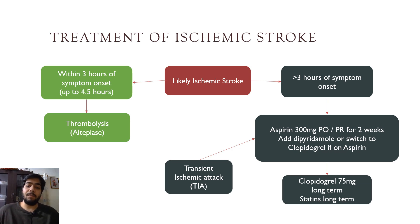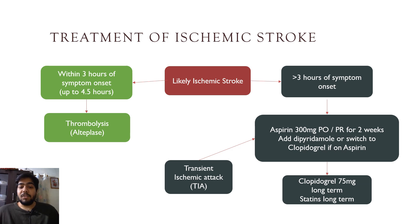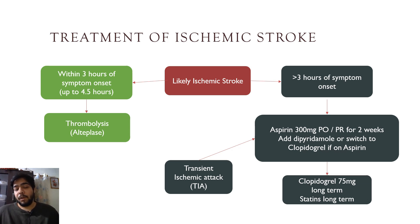In those cases, give aspirin 300mg orally, or rectally if the patient cannot swallow, for two weeks. You can add dipyridamole or switch to clopidogrel if the patient is already on aspirin. After this, start long-term clopidogrel 75mg and statins. These are also the treatments for a TIA.